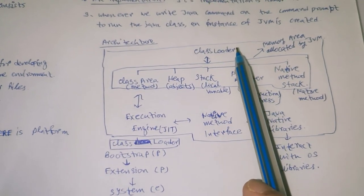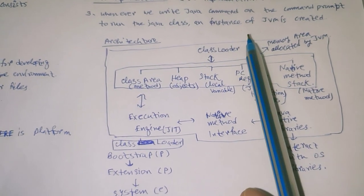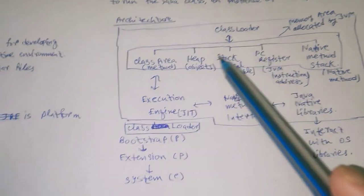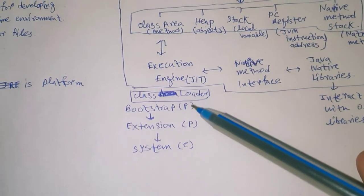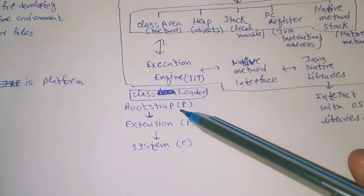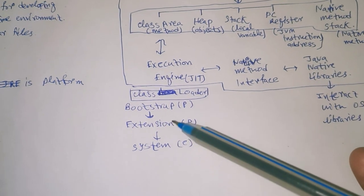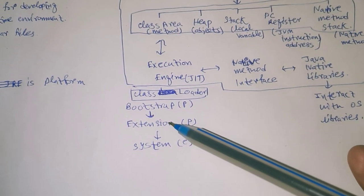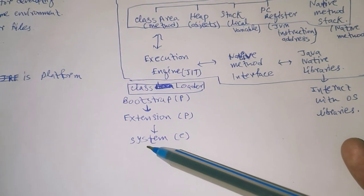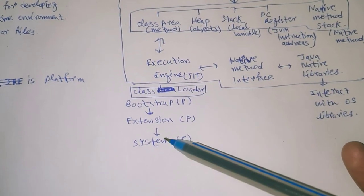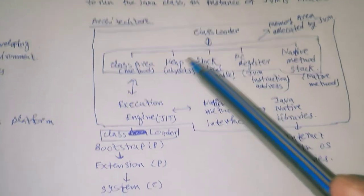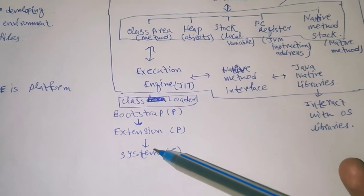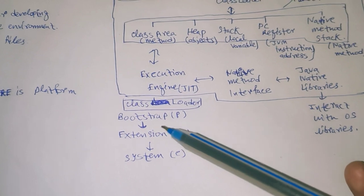What is the class loader? Class loader means whenever a class is loaded to the JVM, it is loaded by the class loader. There are three classes inside the class loader: first is Bootstrap, which is the parent class of all class loaders; next is Extension class, which is the parent of System class and child of Bootstrap; and last is System class, which is the child class of all the classes.